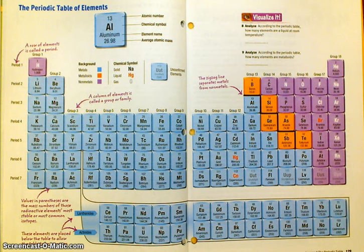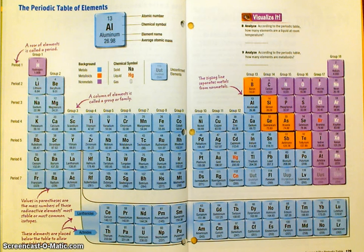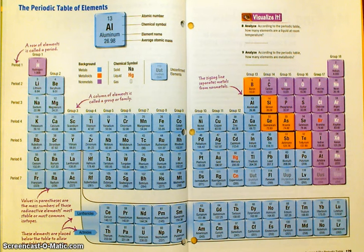Look at the key above. They took out one box as an example — aluminum. For aluminum: 13 is the atomic number, which means that's the number of protons. Al is the chemical symbol. Then they have the element name, and then the average atomic mass. Average atomic mass takes into account the fact that not all aluminum atoms have 13 protons and 14 neutrons — most do, but some don't. The average atomic mass is what you'd get if you took the mass of all the aluminum atoms, added them up, and divided by the number of atoms. This reminds us that atoms of the same element are not necessarily identical because they can have varying numbers of neutrons.